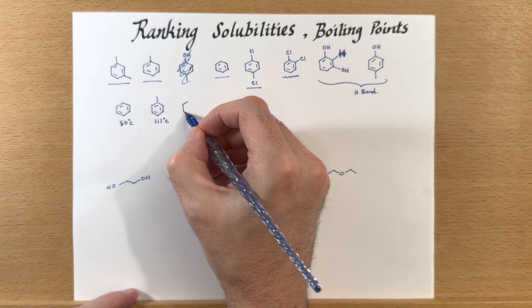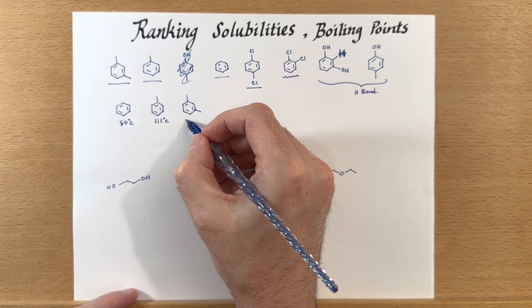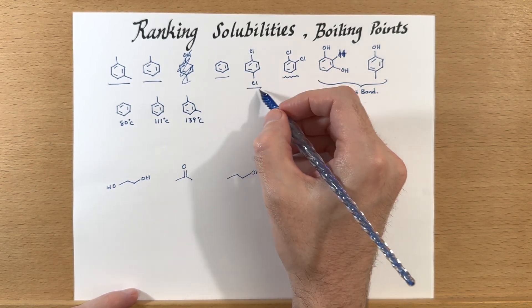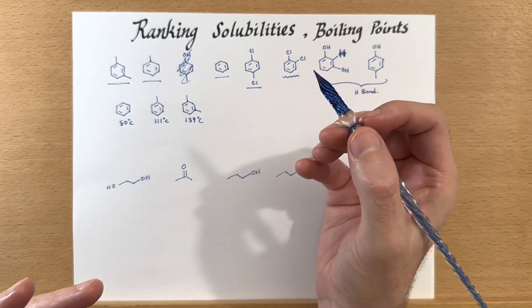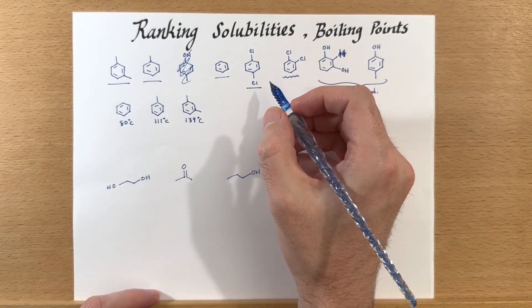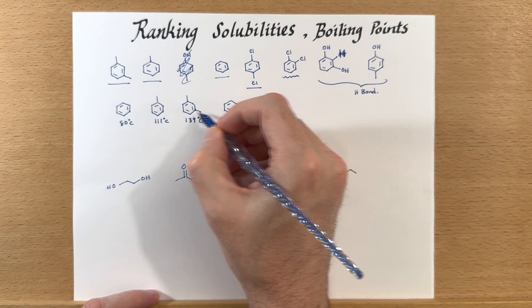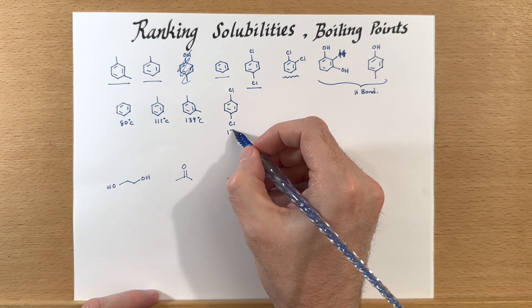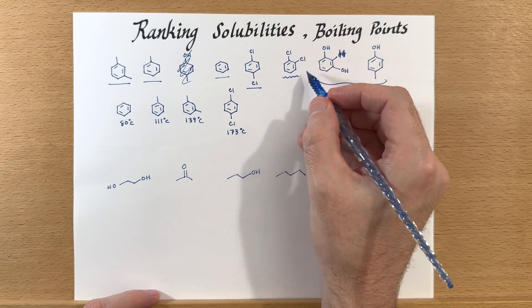Then we get into the disubstituted benzene at 139 degrees, and then finally this dichloride. The chloride is more polarizable, it has a larger molecular weight, it's easier for those electrons to move around, and so the boiling point on this one is much higher than the others — 173 degrees.